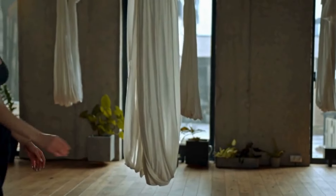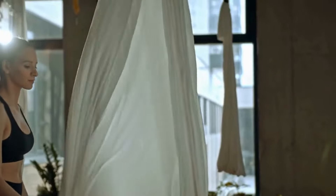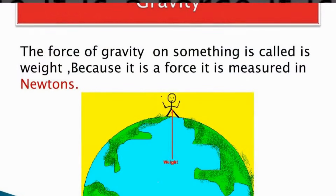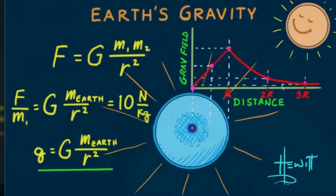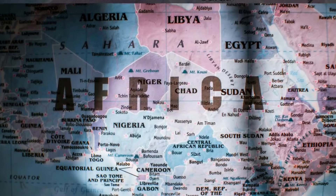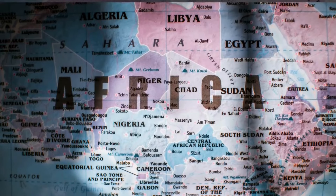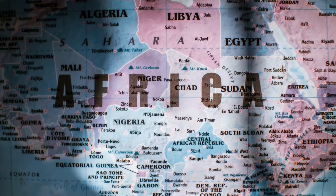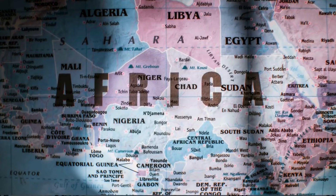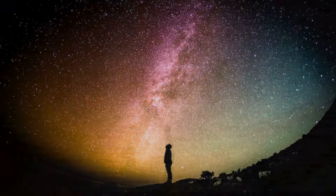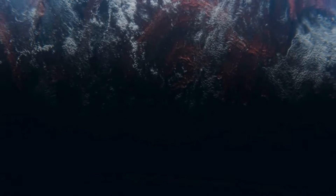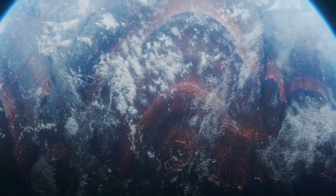Gravity is a cosmic choreographer, orchestrating the grand dance of celestial bodies. The moon orbits Earth, Earth orbits the sun, and galaxies twirl in vast cosmic ballets, all guided by the invisible hand of gravity. It's a force that extends its influence across the universe, shaping the very structure of galaxies and clusters of galaxies.